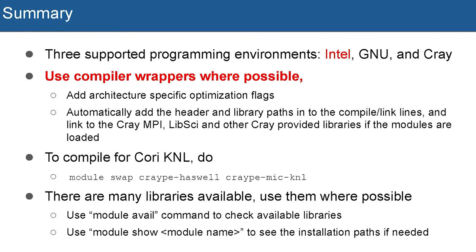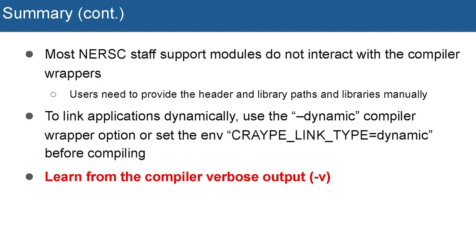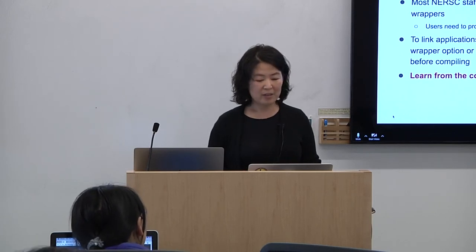To compile for KNL, one more step is needed: you swap CrayPE-Haswell to CrayPE-MICKNL. Many libraries are available and easy to use. If you use compiler wrappers and Cray-provided libraries, just load the module and compile. To link dynamically for now, you need to provide the -dynamic option or set the CRAYPE_LINK_TYPE=dynamic environment variable. Another important message is: learn from the compiler verbose output — you can learn a lot of information about compilation from it.